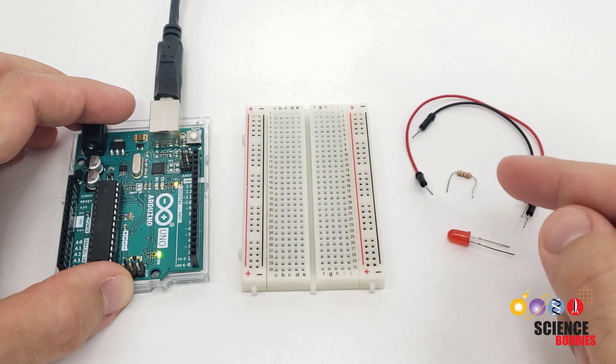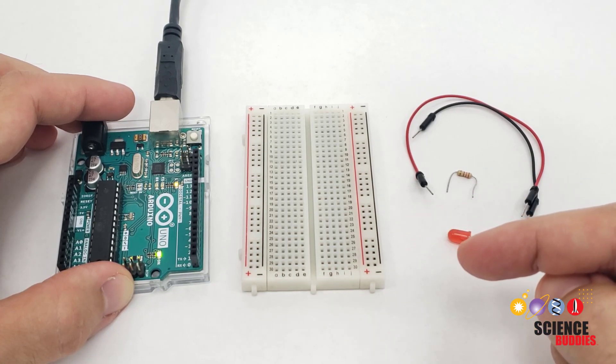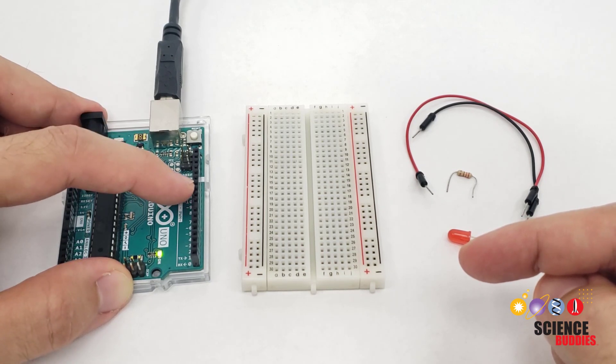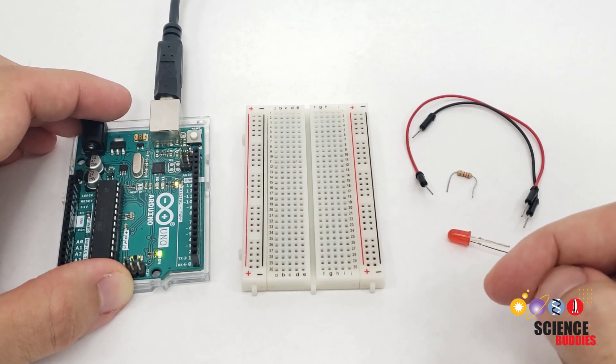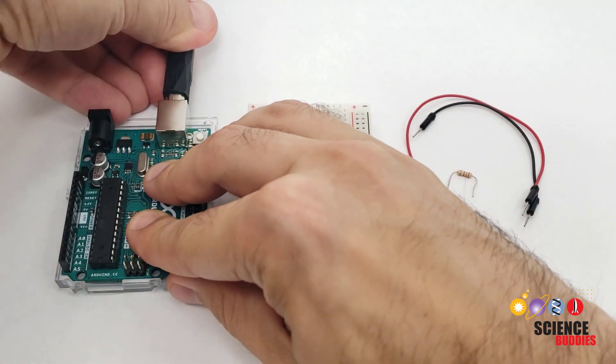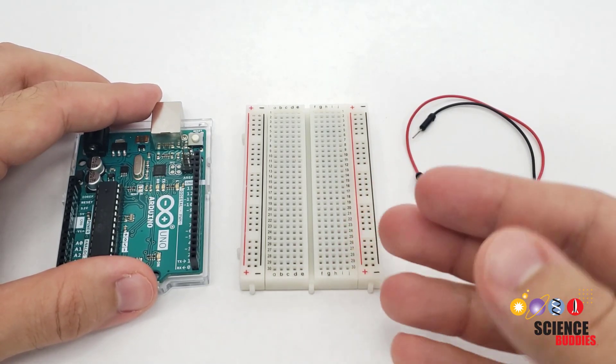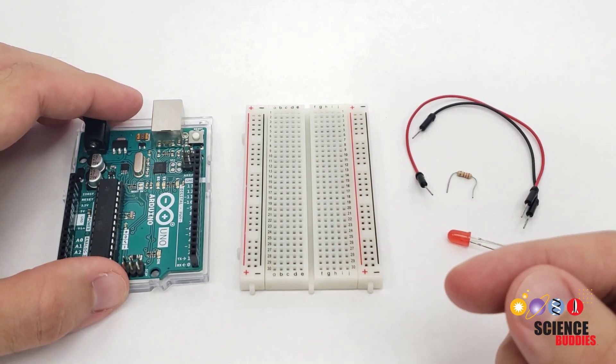We are going to build a circuit that connects the resistor and the LED to the Arduino. Then, we are going to write code that uses one of the Arduino's pins to turn the LED on and off. Note that when you're building your circuit, it's a good idea to unplug your Arduino. That way, you're not working with a powered-up circuit and this reduces the chance of short circuits if you make a mistake.